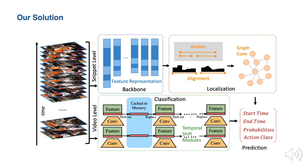Now let's have a look at our solution. Our proposed method is a three-stage temporal action detection framework. It takes a video sequence as input and predicts multiple scored candidate actions. First, we leverage a backbone module to enhance the video feature. Second, we align the video feature to each proposal, and like PGCN, we create a proposal graph to predict action boundaries. Then we apply the video classification network TSM to predict action classes for the proposal.